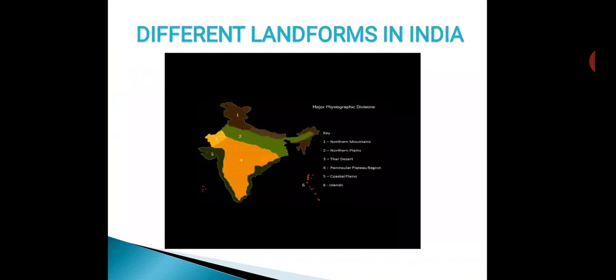Through the map students you can understand different landforms in India. The brown part shows mountains, green parts are plains, deserts are in light yellow color, plateaus in orange color, dark green shows coastal plains, and the dotted orange parts are islands.